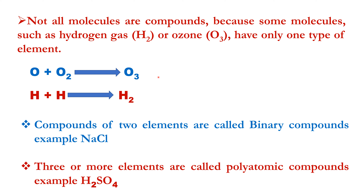Compounds that have two elements are called binary compounds. An example is sodium chloride — it has sodium and it has chlorine, two different elements combined. So sodium chloride is an example of a binary compound.